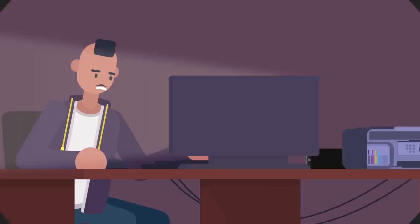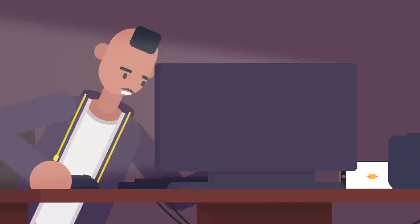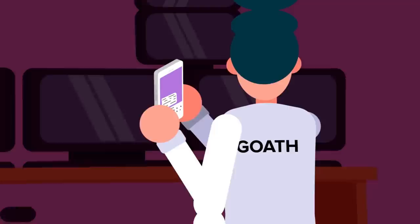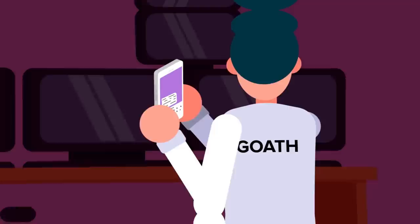It was while editing that Holden noticed another screen lighting up on his desk, accompanied by a vibration, his phone. He reached for it, seeing a notification popped up on the locked screen. It was from Goethe, one of the lost media collectors, and it read, Dude, urgent. Found something that you can make a video on.